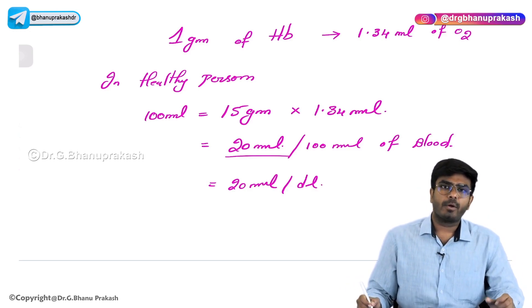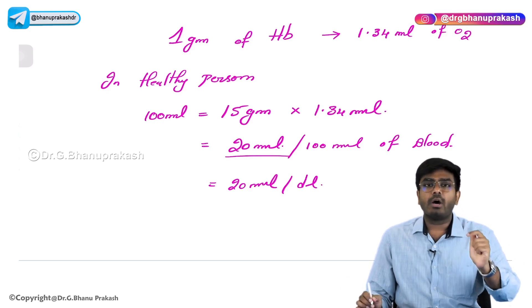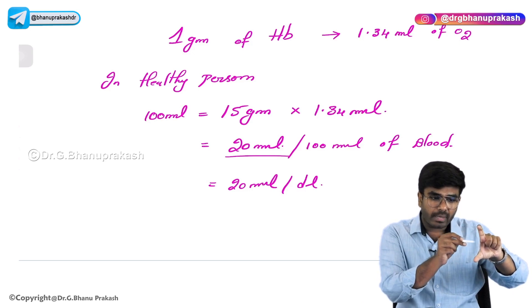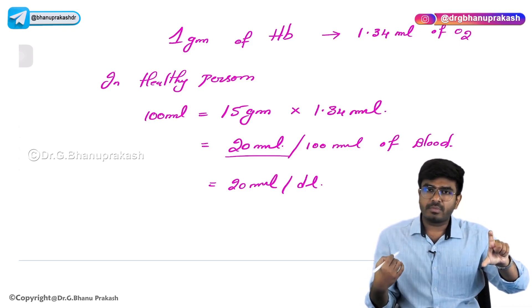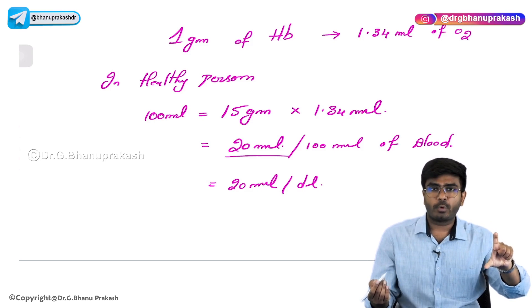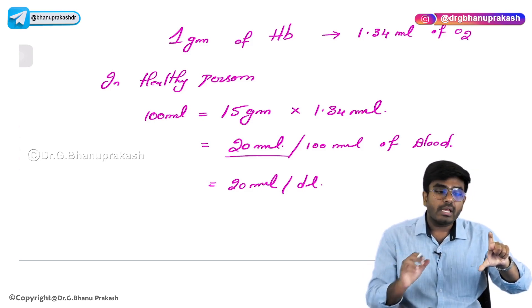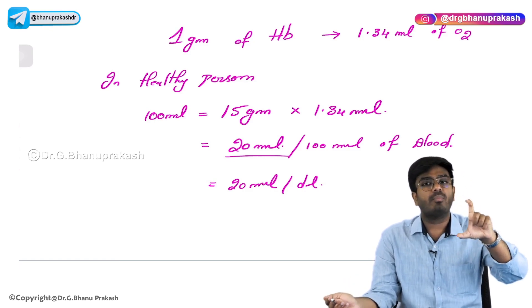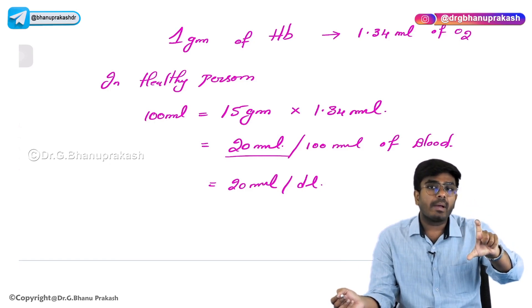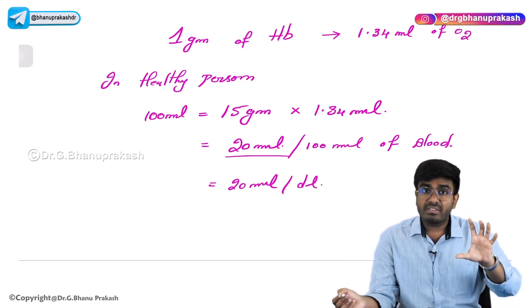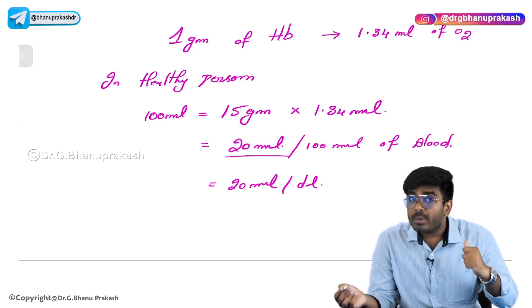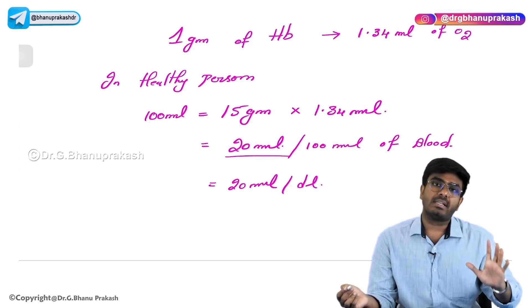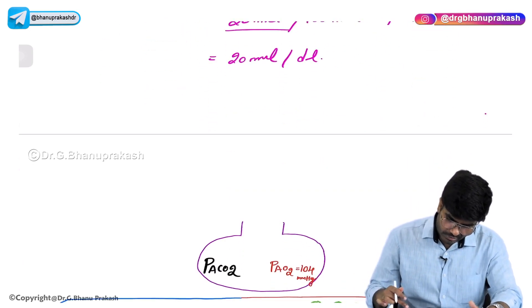100 ml means 1 deciliter. If I take 100 ml of your blood, we know the Hb percent in a healthy male is 15 — meaning there are 15 grams of hemoglobin in that 100 ml of blood. This 15 grams of hemoglobin can carry 20 ml of oxygen. That's the basic thing you need to know.